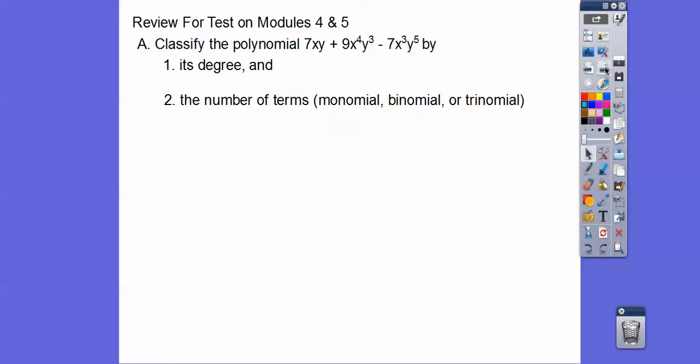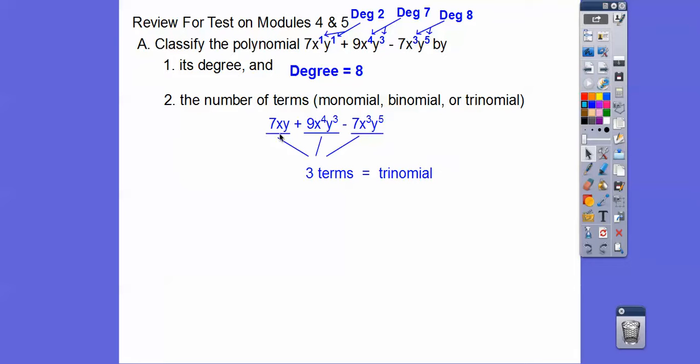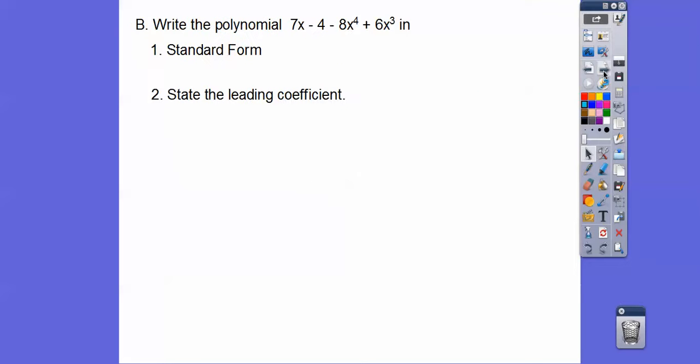Classify the polynomial by its degree and the number of terms. By its degree we have to add the exponents of each monomial. So this is degree 2, 4 plus 3 is 7, 3 plus 5 is 8. So the degree of this whole polynomial, you take the biggest one, it's going to be 8. And then this is a trinomial because there's three terms. The terms are separated by plus or minus signs. So three terms equals tri, so trinomial.